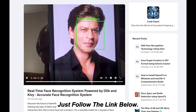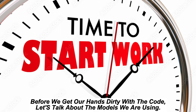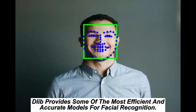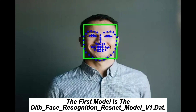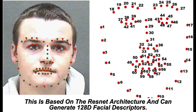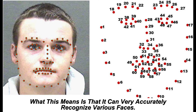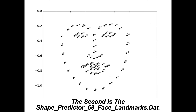Before we get our hands dirty with the code, let's talk about the models we are using. dlib provides some of the most efficient and accurate models for facial recognition. The first model is the dlib face recognition ResNet model v1 .dat, which is based on the ResNet architecture and can generate 128-dimensional facial descriptors, meaning it can very accurately recognize various faces.